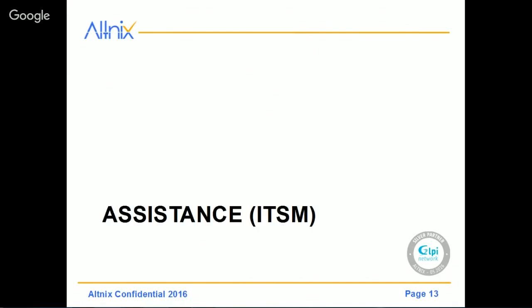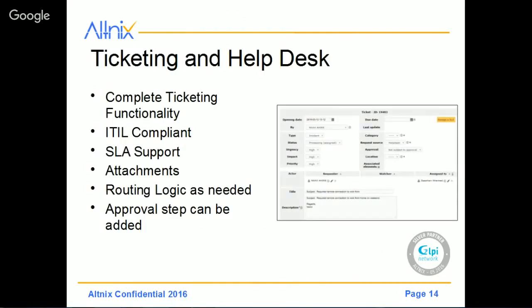The next module is the Assistance menu, where you find a bunch of ITSM features. The first one to talk about is Ticketing and Help Desk. Ticketing is a core part of your ITSM framework, so you will need a very good ticketing system — and that's exactly what GLPI provides. This is a complete functionality for ticketing use cases. You can define SLA support tickets, manage different categories, and set urgency impact on priority for each ticket. You can also have an approval process in place, and routing logic on how tickets should be assigned to different people in the support team, so the ticket automatically gets routed to a particular technician, support agent, or another user.